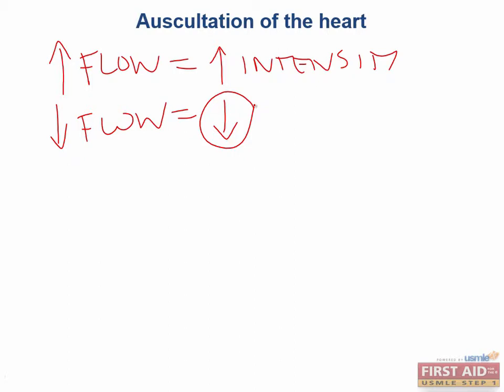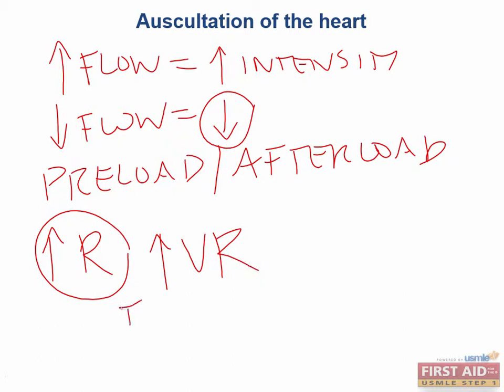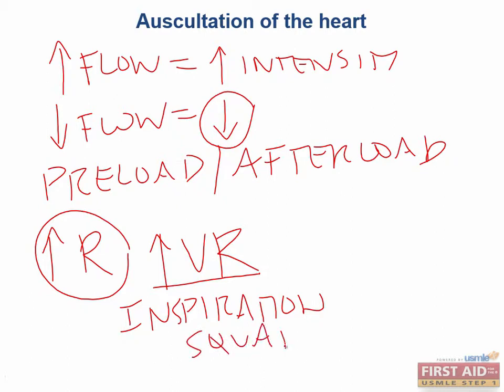Now how can we augment blood flow? We can change the preload or afterload with certain maneuvers. Maneuvers such as inspiration and rapid squatting will increase right-sided murmurs because they both lead to increased venous return. Inspiration creates negative intrathoracic pressure, which leads to an increase in venous return. And rapid squatting will do the same.